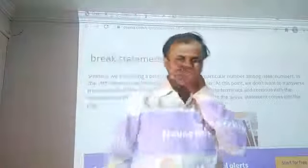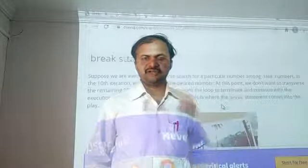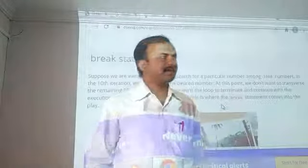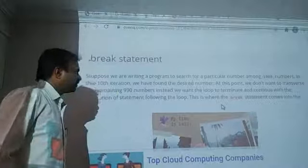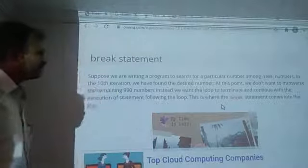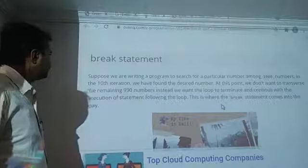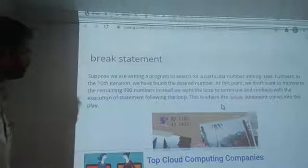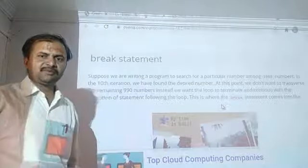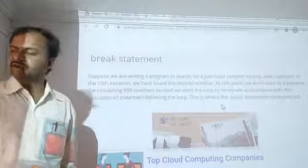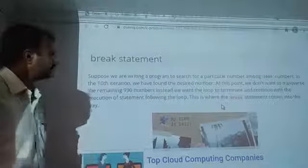Suppose we have 1000 numbers. For a particular number among 1000 numbers, we have found it at the 10th iteration. We have not found the number in the last iterations. The condition is satisfied at that point.